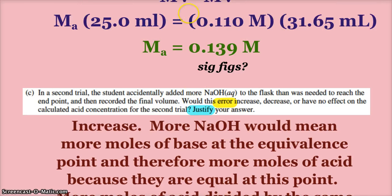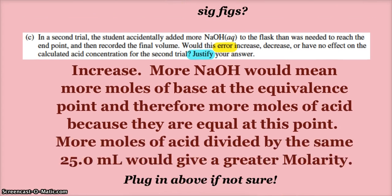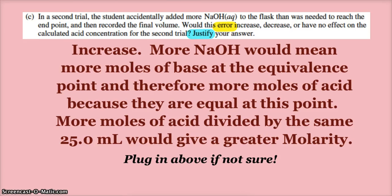You could have just gone to this calculation and instead of 31 plug in 35, and you would have got a larger molarity of your acid. And that could have triggered oh okay, that's why. So if you weren't sure if it would increase, decrease, or have no effect, go up and recalculate and put in a fake higher number of base.